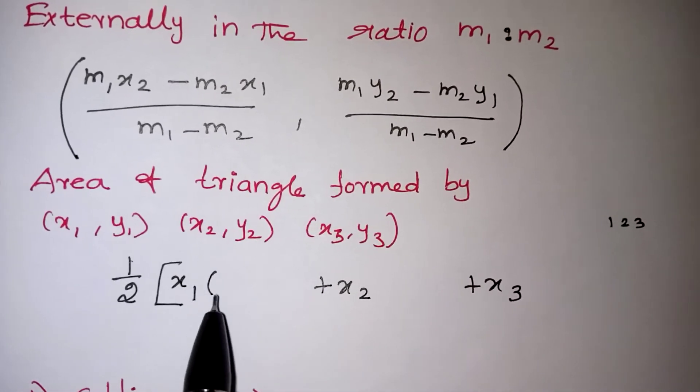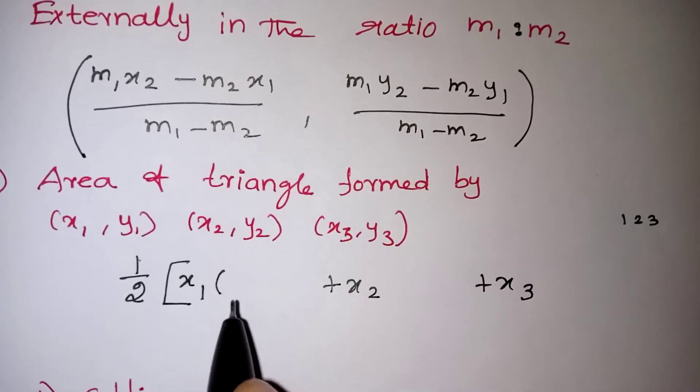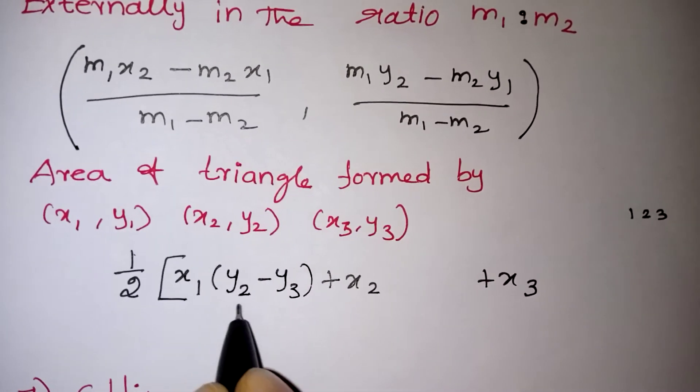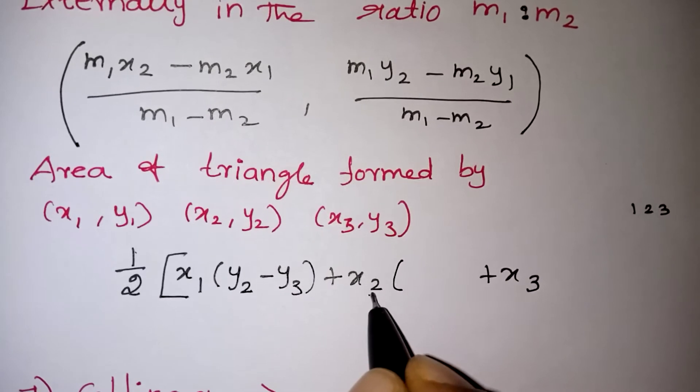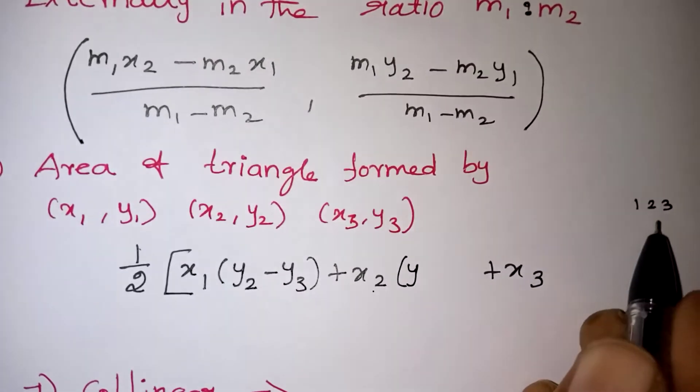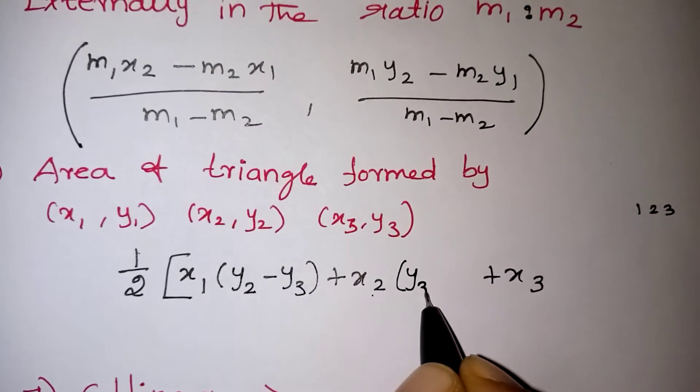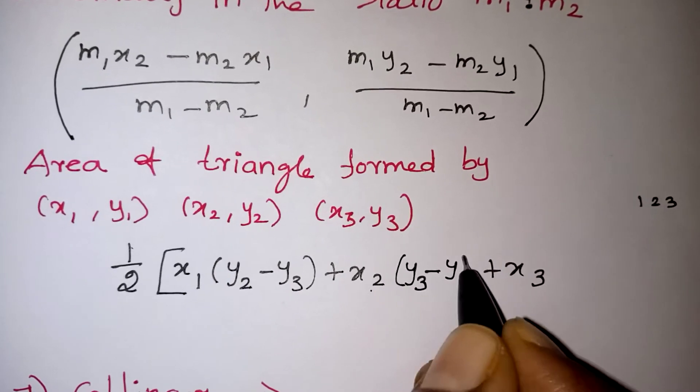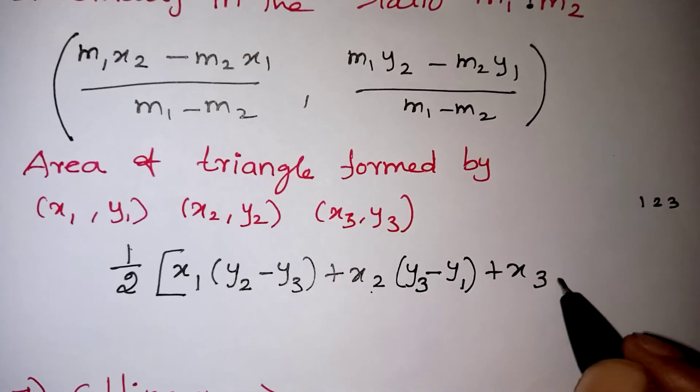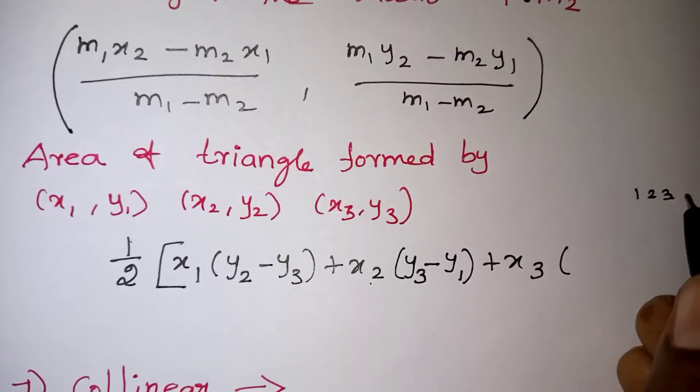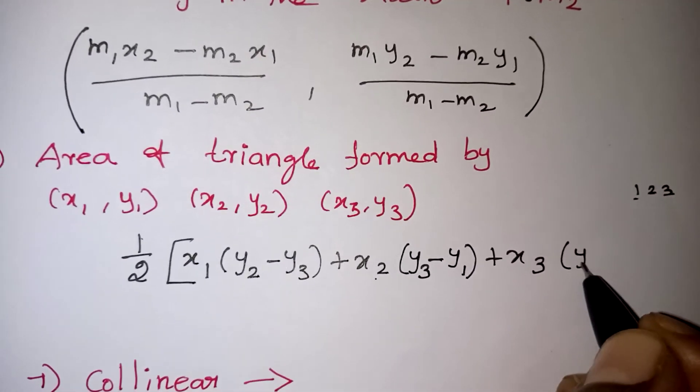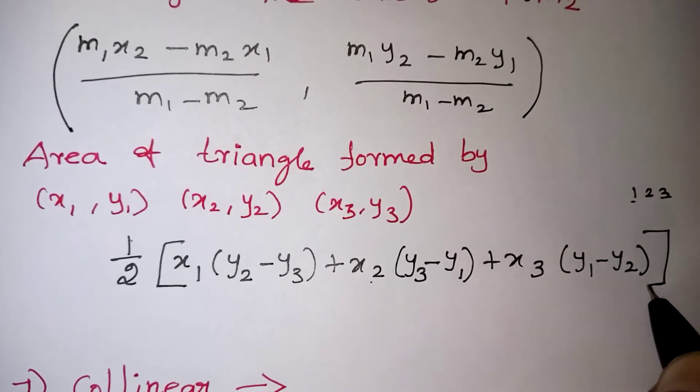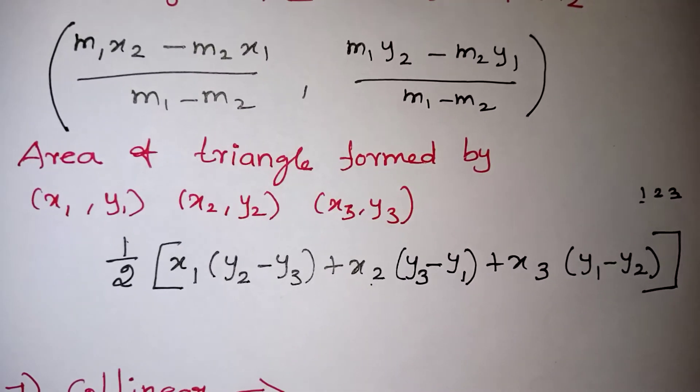Here we have taken 1, so the next number definitely it should be 2. So we have to write y2 minus y3. So 1, 2, 3 we are getting. Now here the starting number is 2, so we have to write 3. After 2, definitely 3 should come. So y3 minus, when 3 came, which is missing? 1 is missing. That should be written as y1. Here 3 is the starting one, then after 3 we have to take 1 and 2. So y1 minus y2 we have to take. Then again we have to close it like this. This is the formula for finding area.